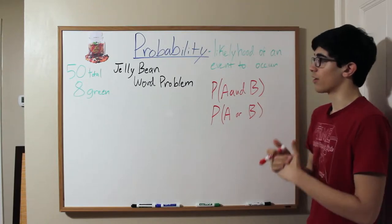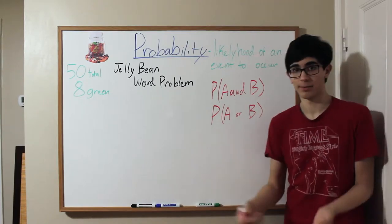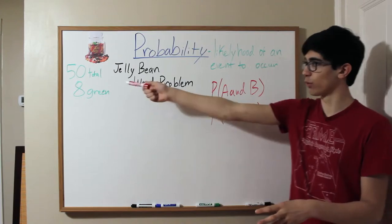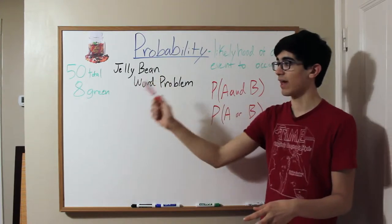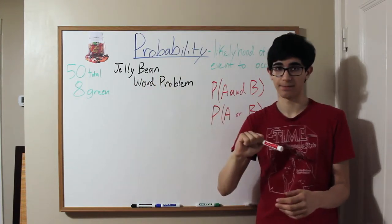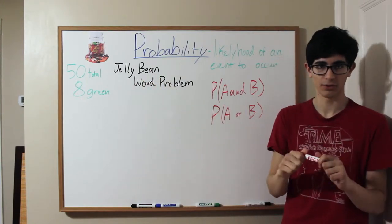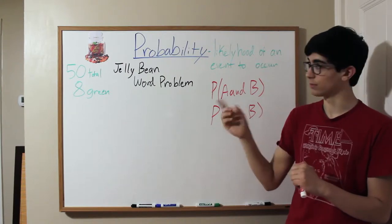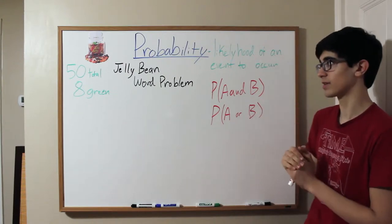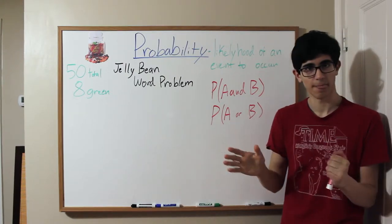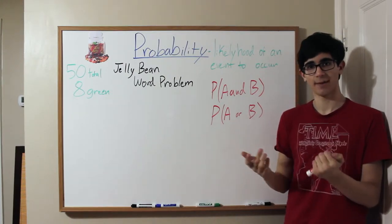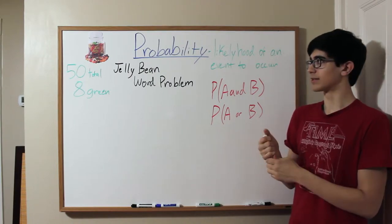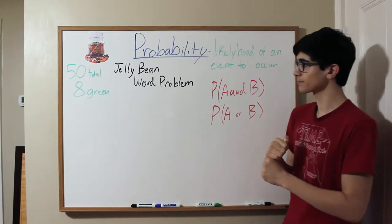In our jelly bean word problem, we have a jar of 50 jelly beans — 50 total jelly beans, 8 of which are green. Now you are allergic to the green dye that they use to make these jelly beans this color, but you don't know that yet. So this is the first time you're eating jelly beans, and you don't know that you're allergic to this green dye.